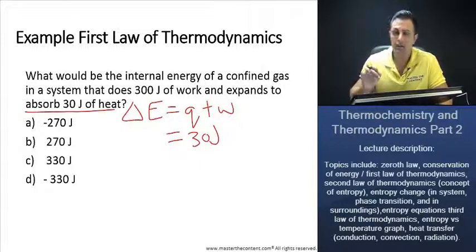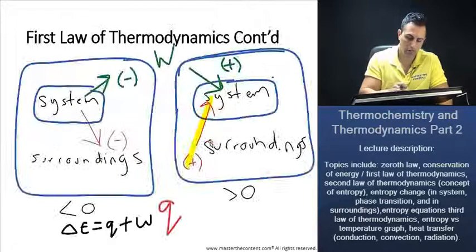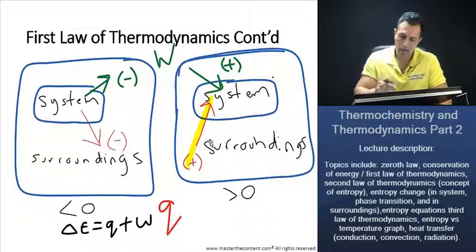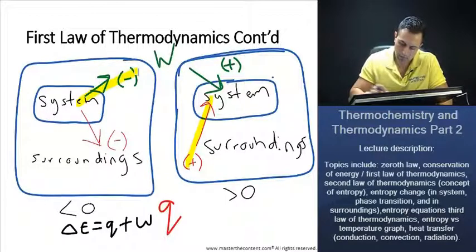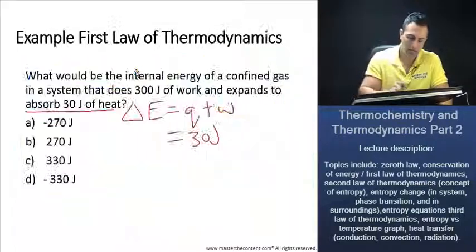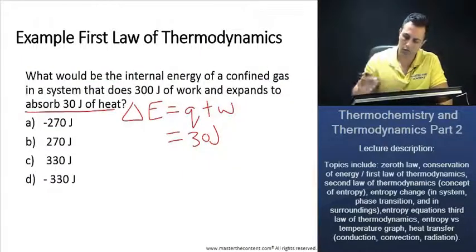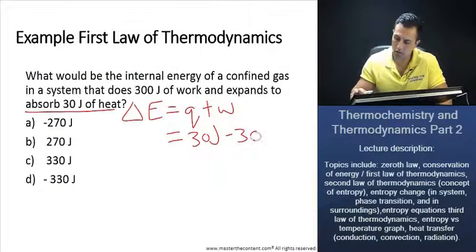Next, it says that the system does 300 joules of work. So now let's go back at our slide. And we see here when the system does work, it's actually going to be negative. We can go ahead and write in a value of negative 300 joules.